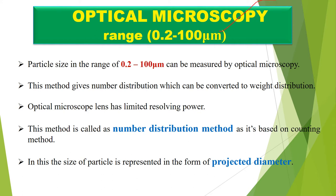Particles in the range of 0.2 to 100 micrometers can be measured by optical microscopy. This method gives a number distribution, which can be converted to weight distribution.